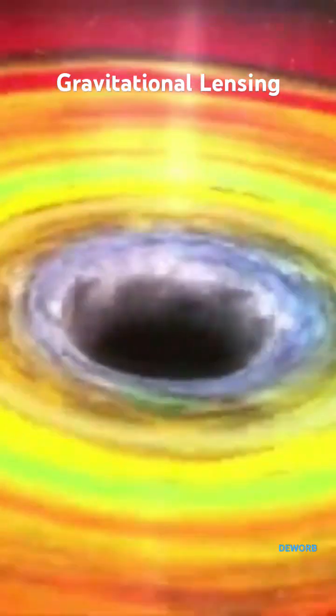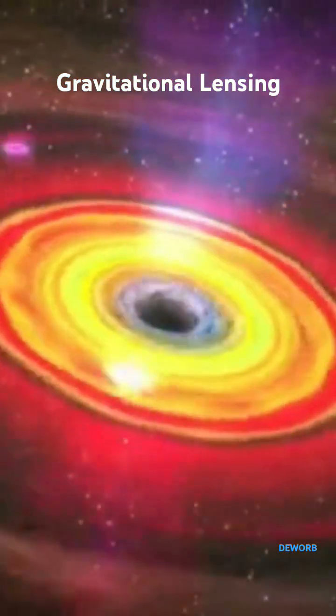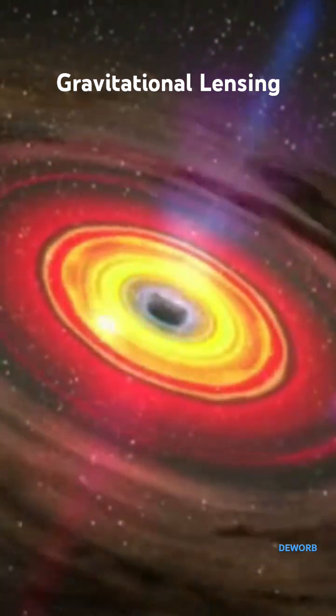Here's how it works. Massive objects like galaxies or black holes create such a strong curve in space-time that even light bends as it passes near them.